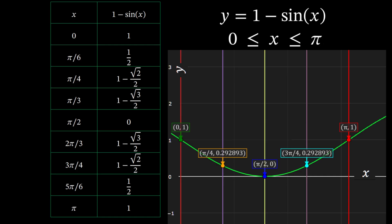This simple sketch shows the overall shape of the function one minus sine of x over the interval from x equals zero to x equals pi.